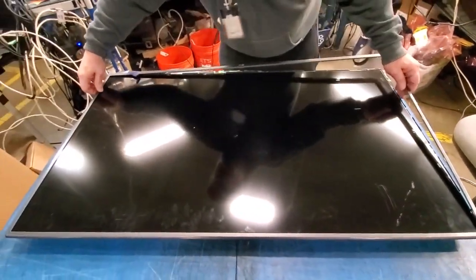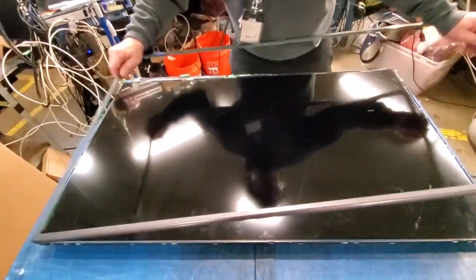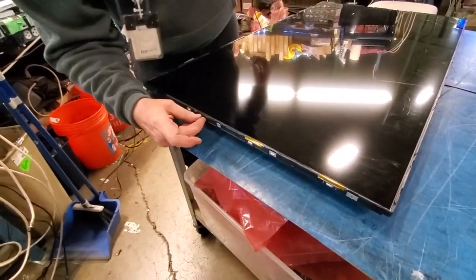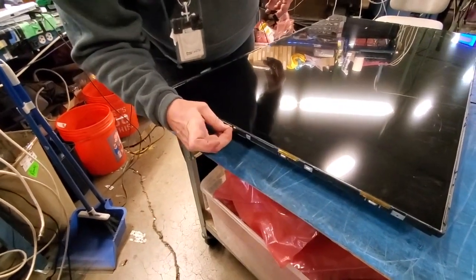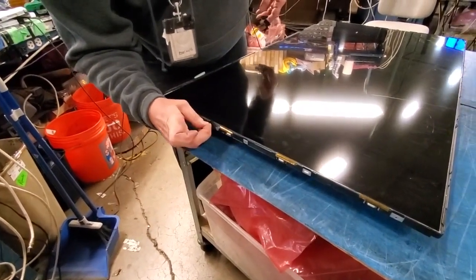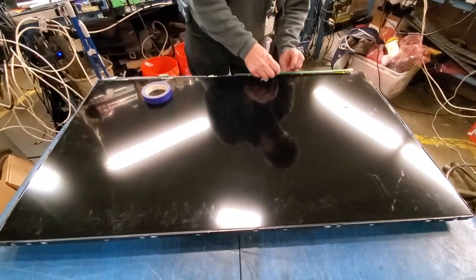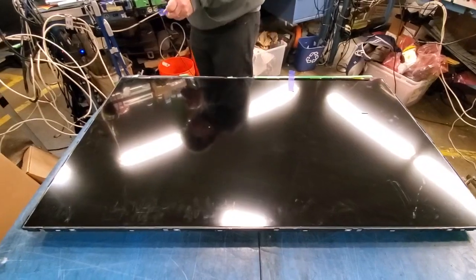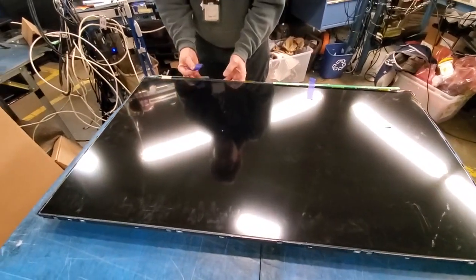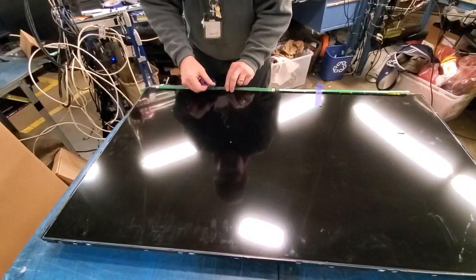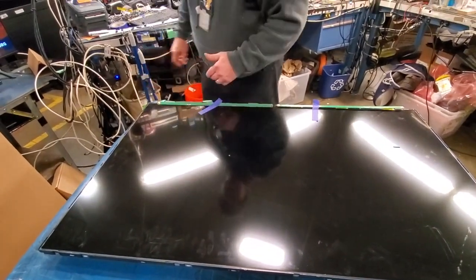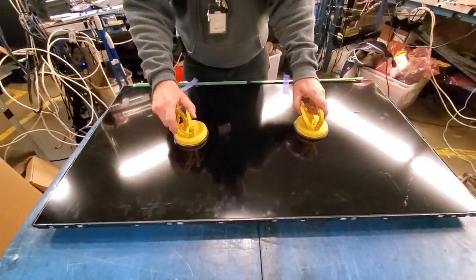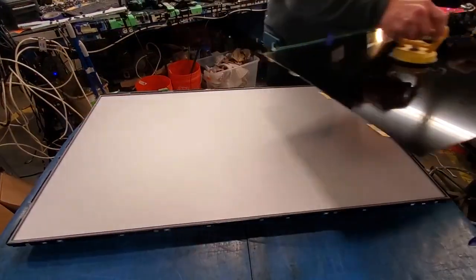Flip the TV over and remove the bezel around the TV. Very gently lift up the scan drive boards and then tape them to the panel. Using suction cups, lift and remove the panel.